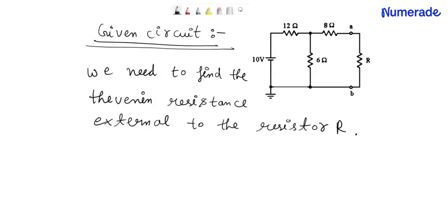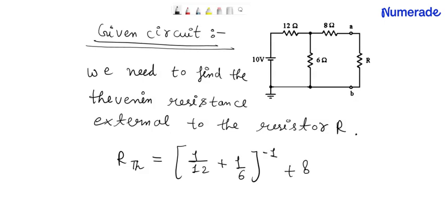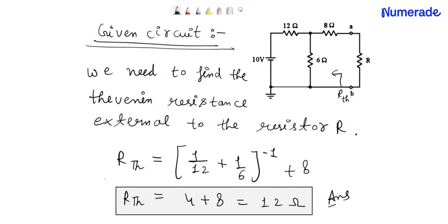We can write RTH, that is R-Thevenin, is equal to (1/12 + 1/6) inverse plus 8. RTH equals 4 plus 8, that is equals to 12 Ohm. This is our final answer.